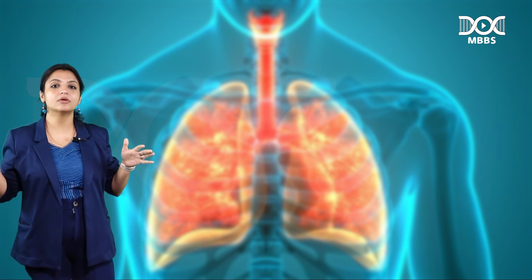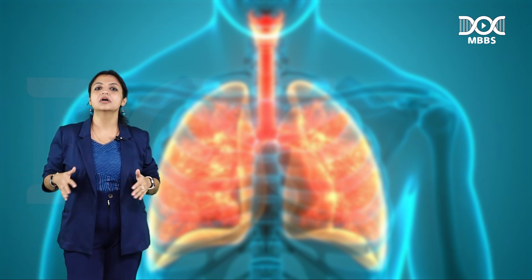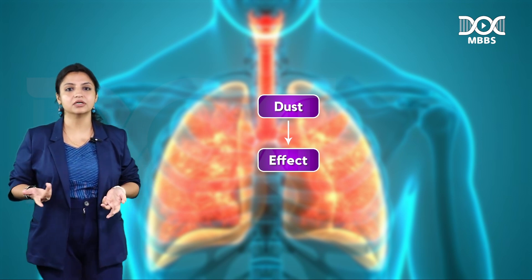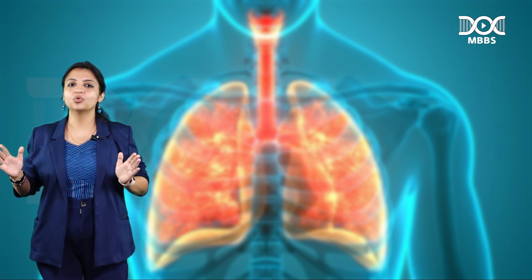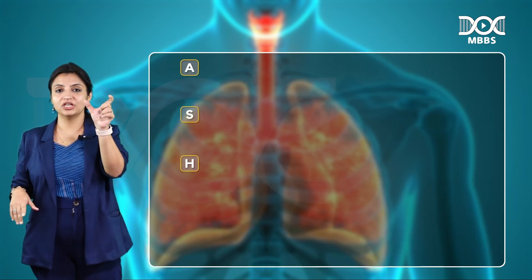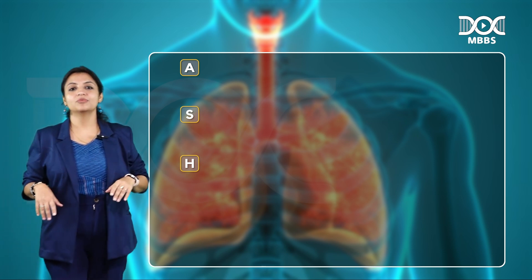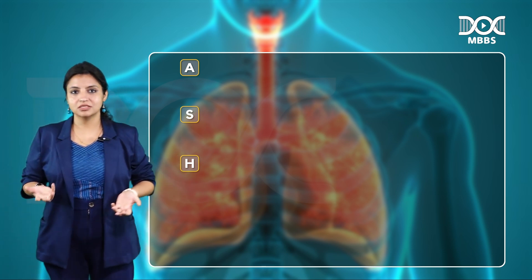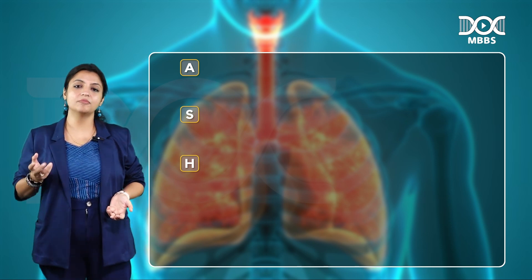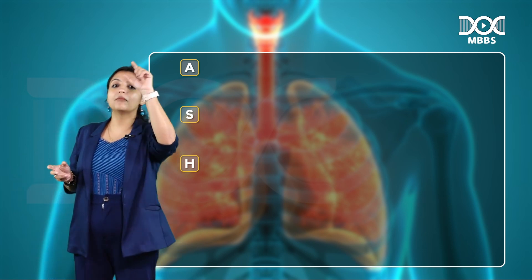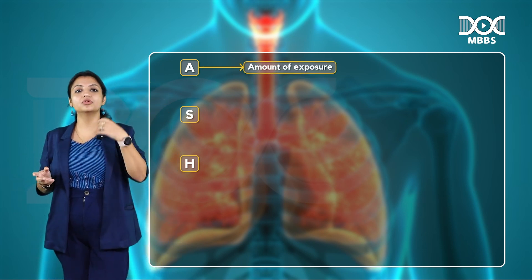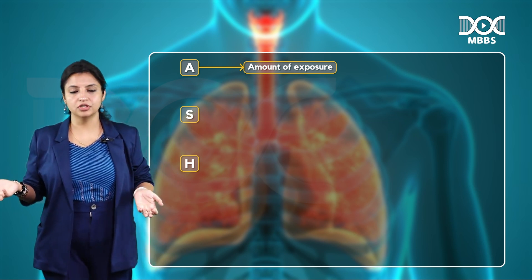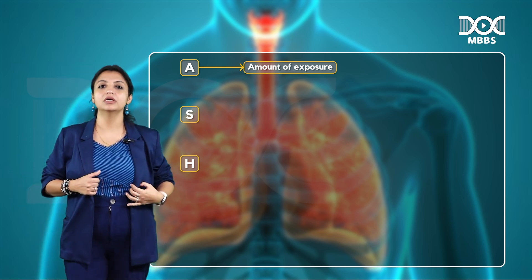Now, which dust is going to cause which effect? Remember the simple code: ASH. What effect a particular dust causes depends on, number one, A — the amount of exposure to that particular dust. The amount of exposure defines how severely you are going to be affected.